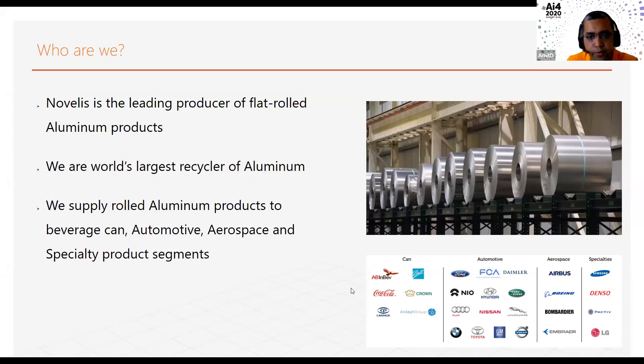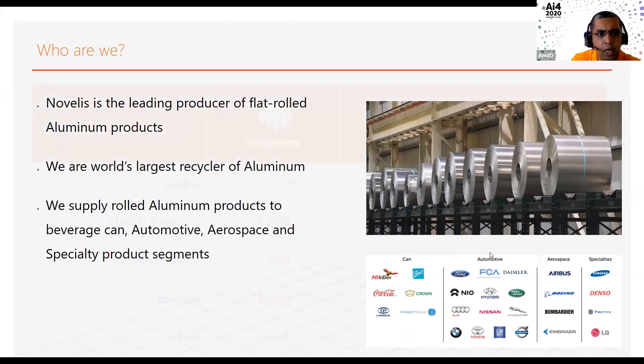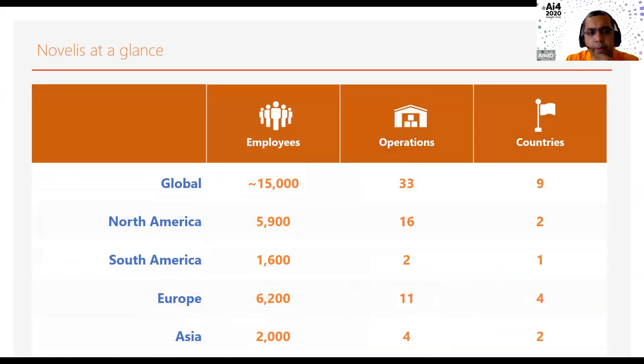If you have used any beverage, or if you have purchased an automotive vehicle, there is a good chance that you have touched our aluminum. We are a global company with operations in nine countries, having 33 facilities, employing 15,000 plus people. It's a global manufacturing company and application of data science is relatively new for this company.